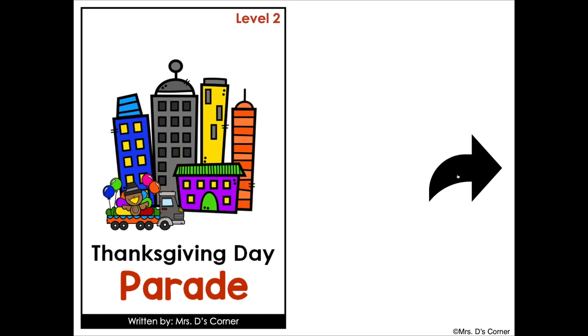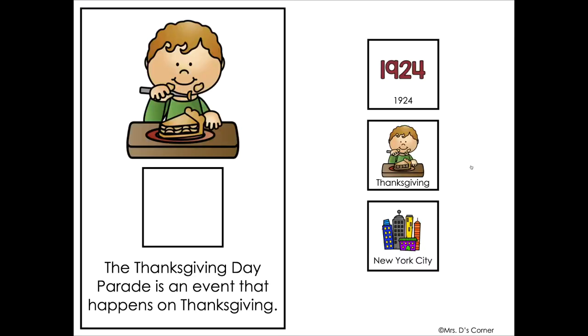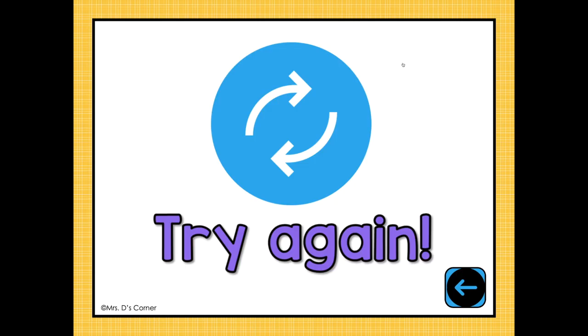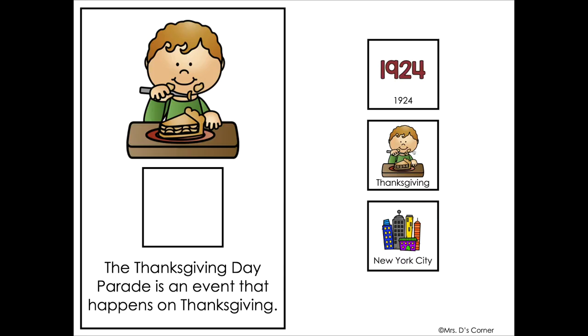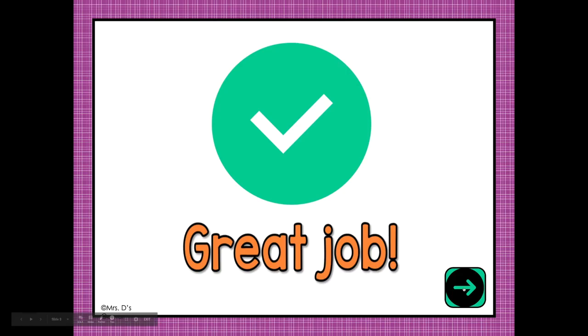To get started, you'll click the arrow to move through. You will read the text or the student will read the text, and if they click an incorrect answer, it will show them the try again page. They'll click back and have to click the correct answer.